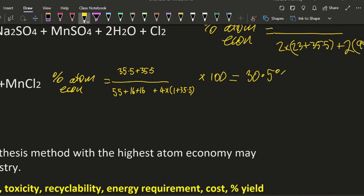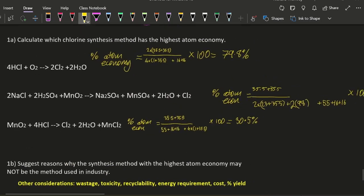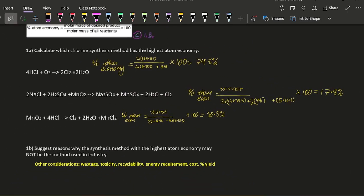All right, so clearly the one that has the highest atom economy is the first one. So atom economy, well that's kind of linked to the wastefulness of your process. The higher the atom economy, the less wasteful the reactants were in terms of producing it. But obviously that's a very oversimplification when it comes to industrial synthesis of these things.